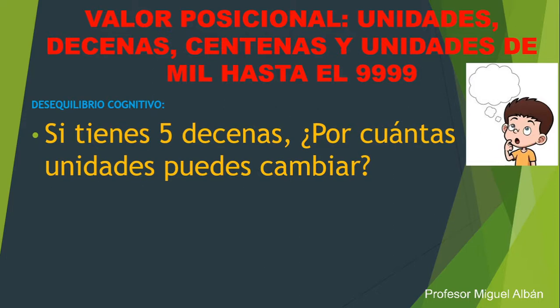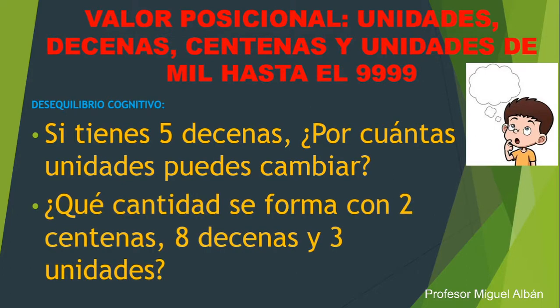Vamos al segundo desequilibrio cognitivo. ¿Qué cantidad se forma con dos centenas, ocho decenas y tres unidades? Vamos razonando: tengo dos centenas, hasta ahí tendría 200. Ocho decenas, tendría 80. Y tres unidades que formarían el 3. Por lo tanto, se formaría el número 283.